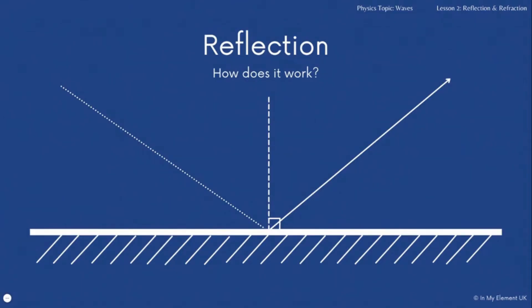So how does reflection work? We've got a diagram here showing you a mirror. The base with the hash lines is the mirror. The dotted line on the left hand side going in diagonally is the ray of light going in towards the mirror. The solid line coming out is the reflected ray of light. So the incident ray is the ray that goes in as the dotted line. That incident ray hits the mirror and is reflected. You can see the reflected ray coming out.